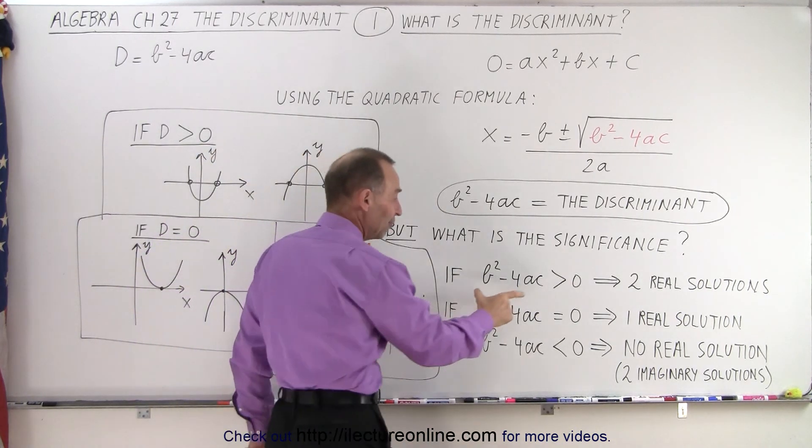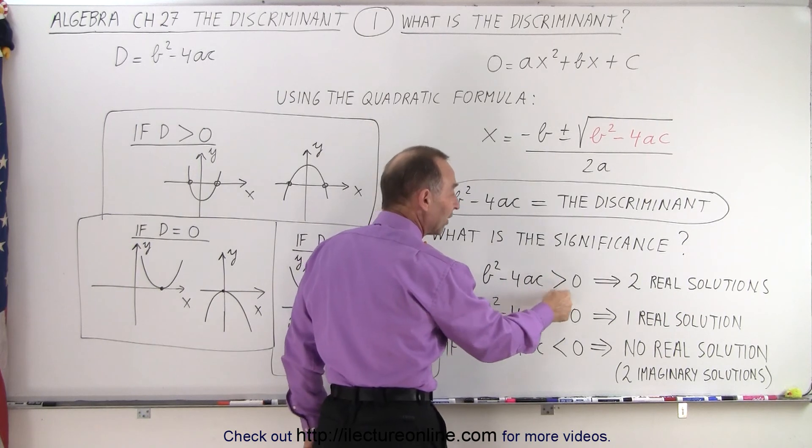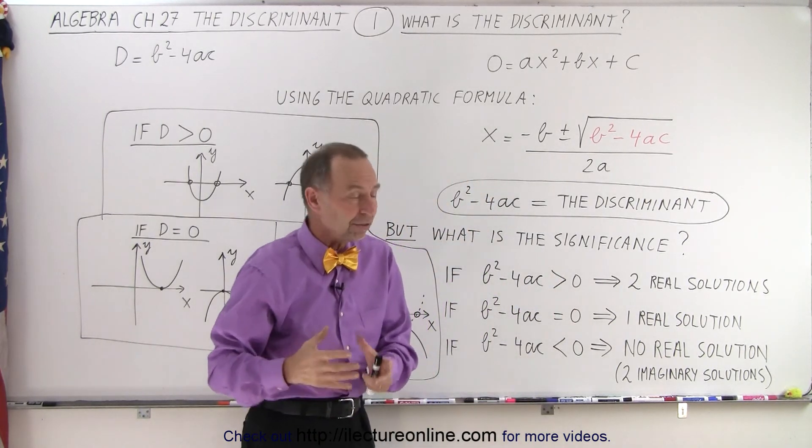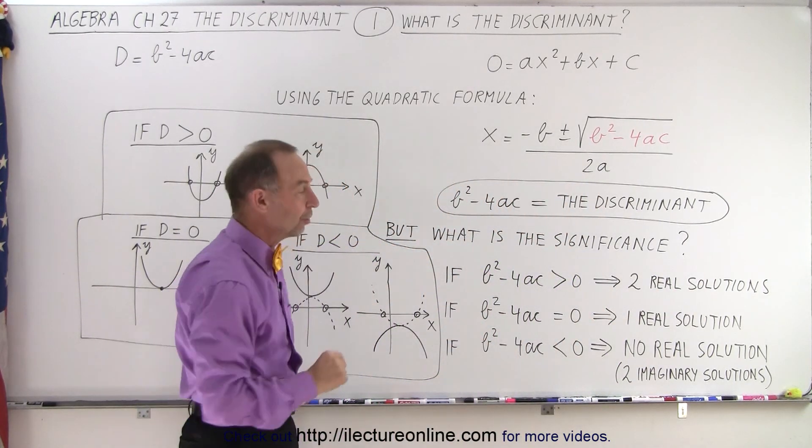For example, if b² - 4ac, which is called the discriminant, is greater than zero, in other words if that's a positive number, we know that there are two real solutions to that quadratic equation.